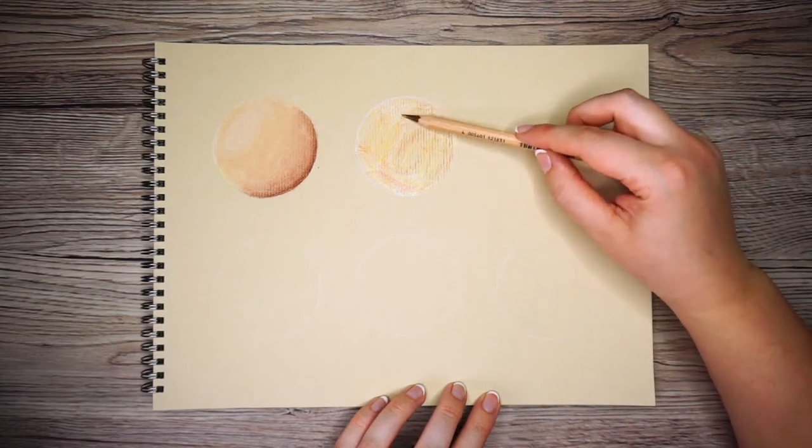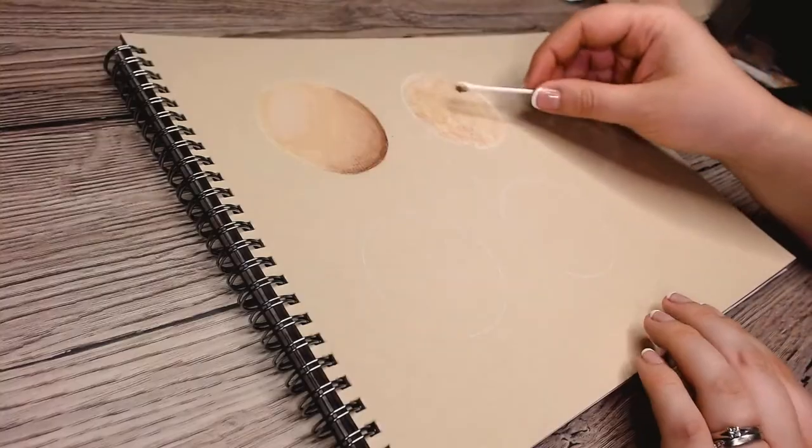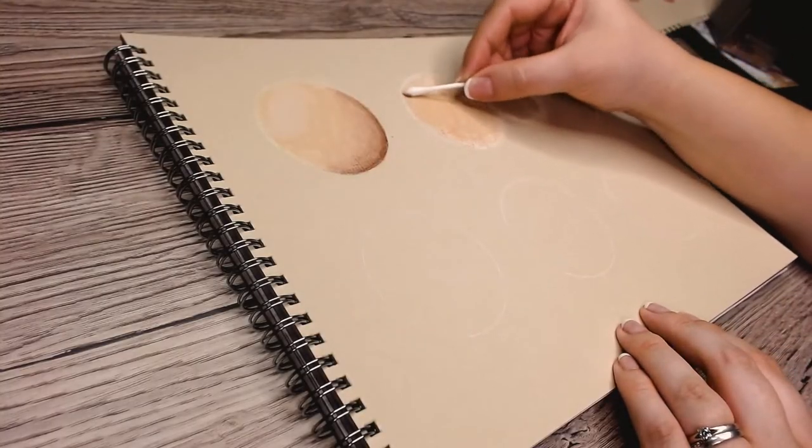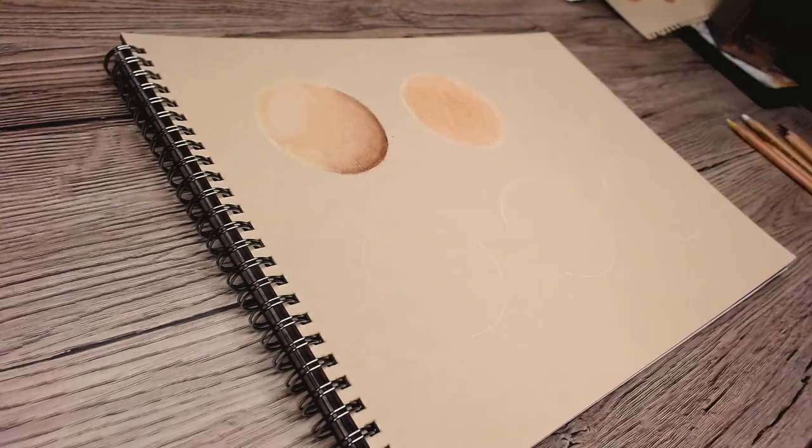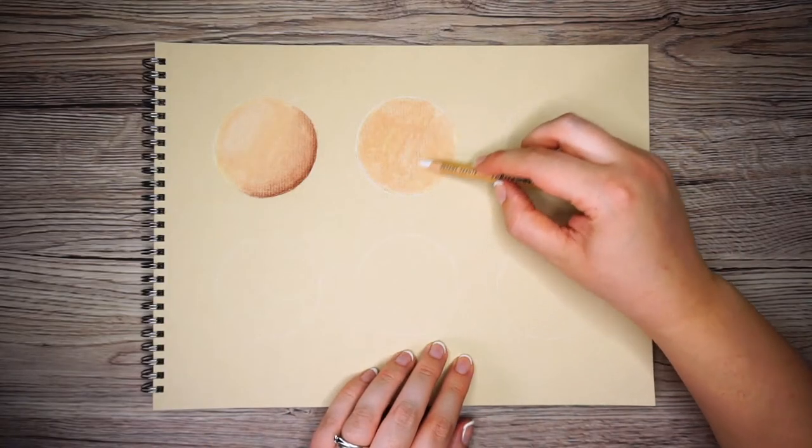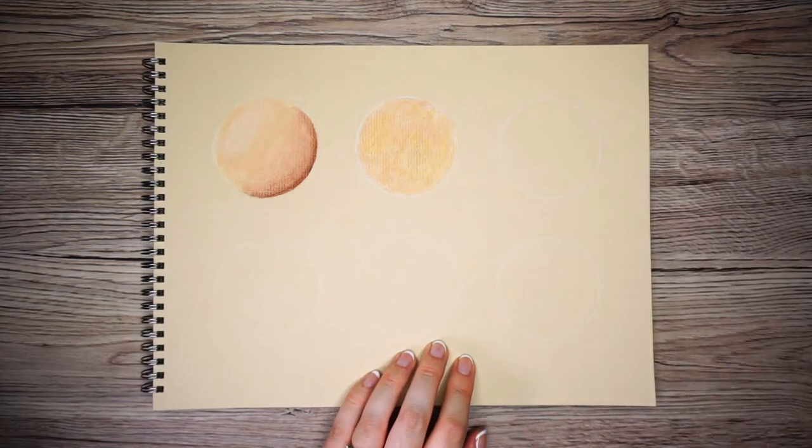And what's good with pastels is if when I blend this together I feel like it's too dark, I can just add some more white. White goes really nicely over the top of other pastel colors. And I'm going to blend that all together. So it's not looking very smooth at the moment, it's looking a bit blotchy, so I'm going to do exactly the same again.